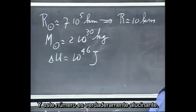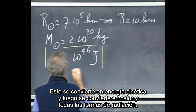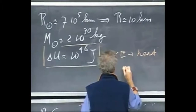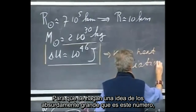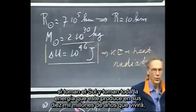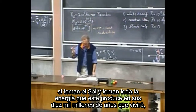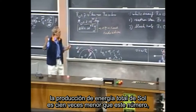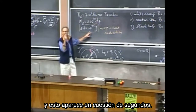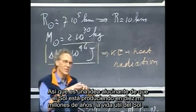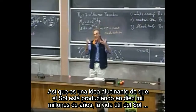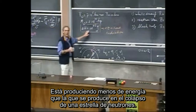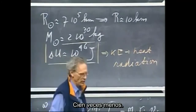This number is truly mind-boggling. This energy is converted to kinetic energy and then to heat and all forms of radiation. To give a feeling for how absurdly large this is: if you take all the energy the sun produces in its entire 10 billion year lifetime, the total energy output of the sun is 100 times less than this number — and this comes out in a matter of seconds. So the sun produces in 10 billion years less energy than what happens during a stellar collapse to a neutron star — 100 times less.